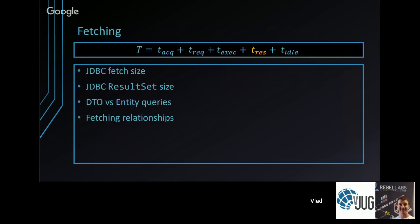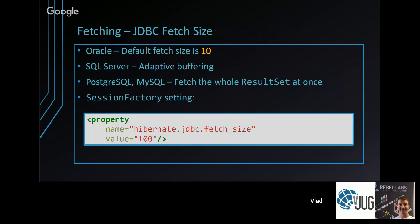Fetching is arguably the number one performance problem when using JPA and Hibernate — it's very easy to fetch more data than you really need. Things to consider: fetch size, result set size, whether you're fetching DTOs or entities, and how many associations you're fetching.